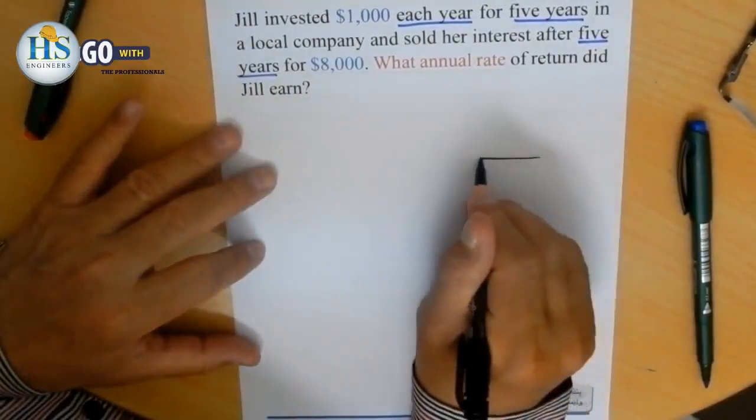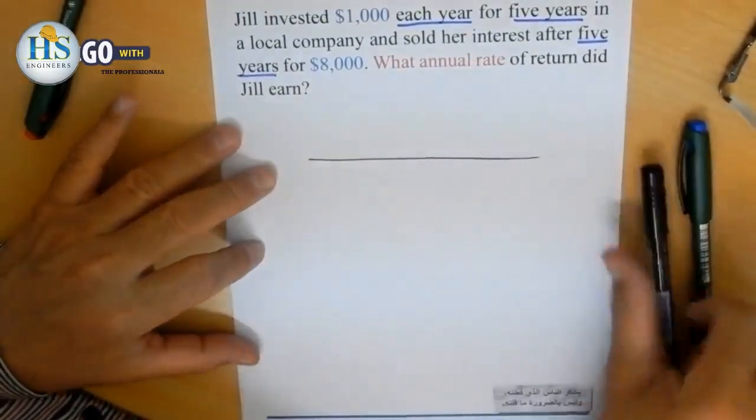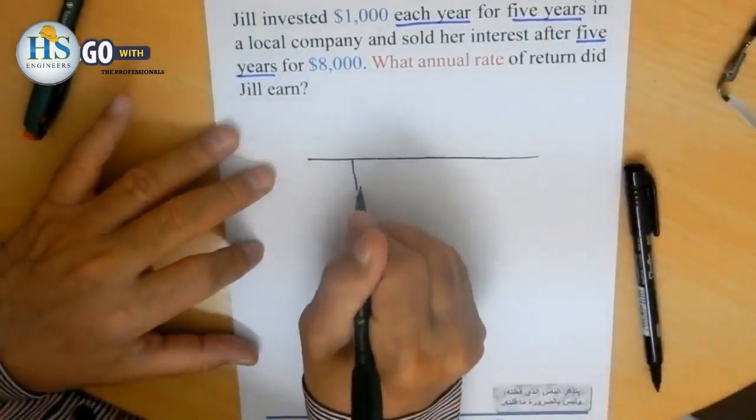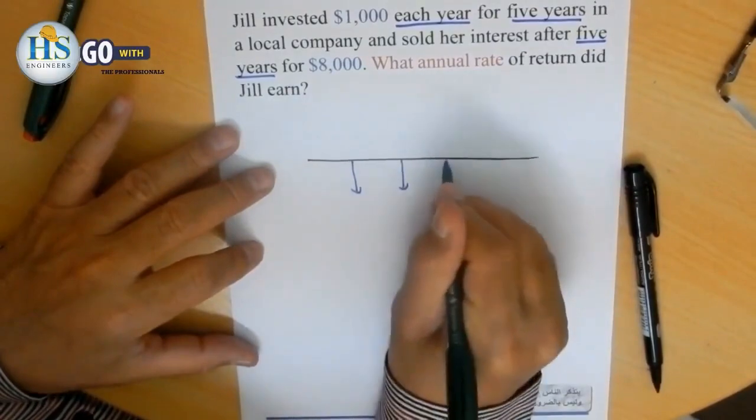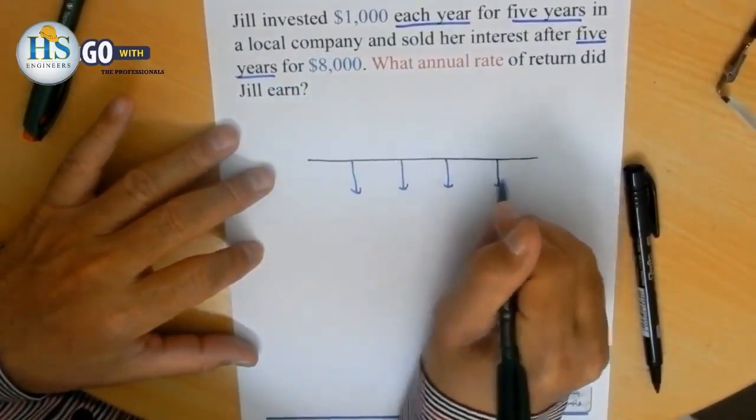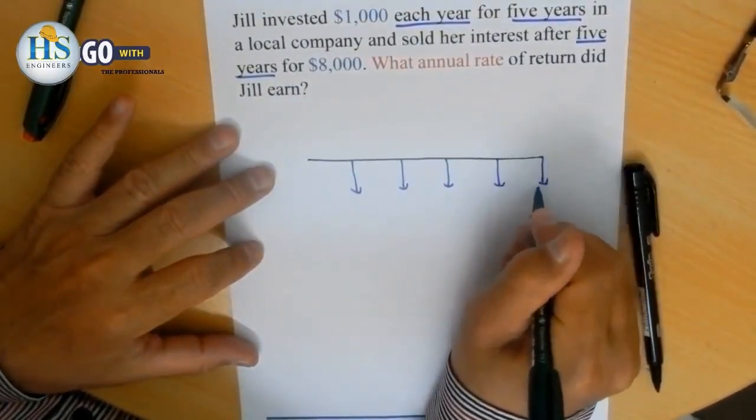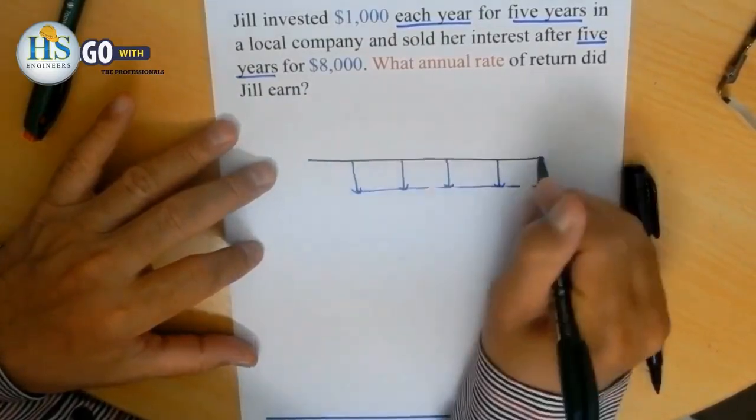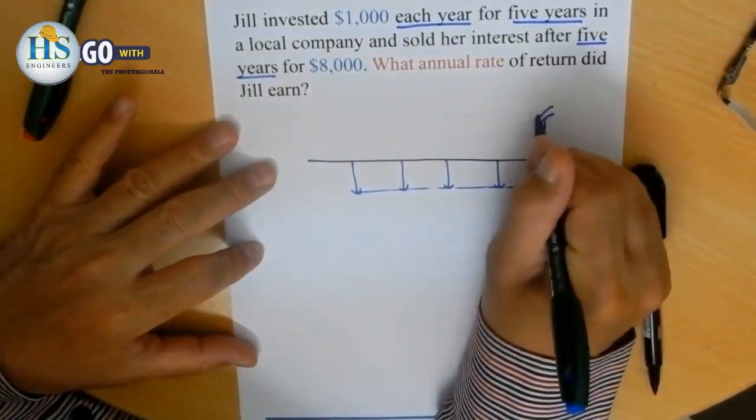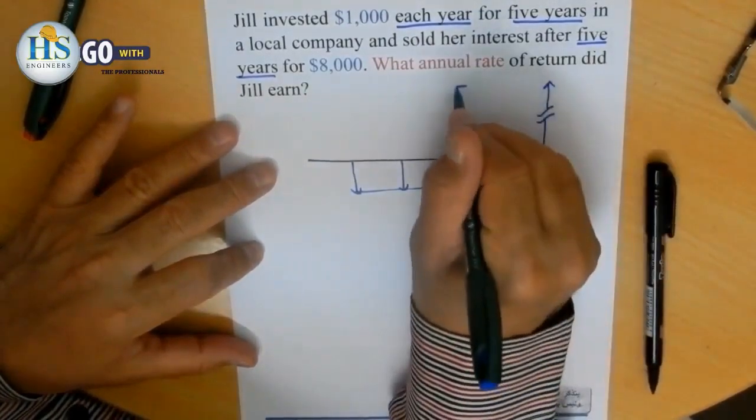So this person made five payments. Here's payment 0, 1, 2, 3, 4, 5. And then received an amount F equals $8,000.